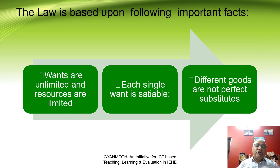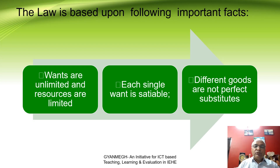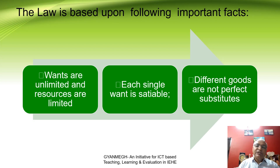This law depends upon the following facts: wants are limited, resources are limited, and the budget of the consumer is limited. So a consumer at a particular point can satisfy only one want rather than different wants. And goods are not perfect substitutes — like tea and coffee, goods are imperfect substitutes.